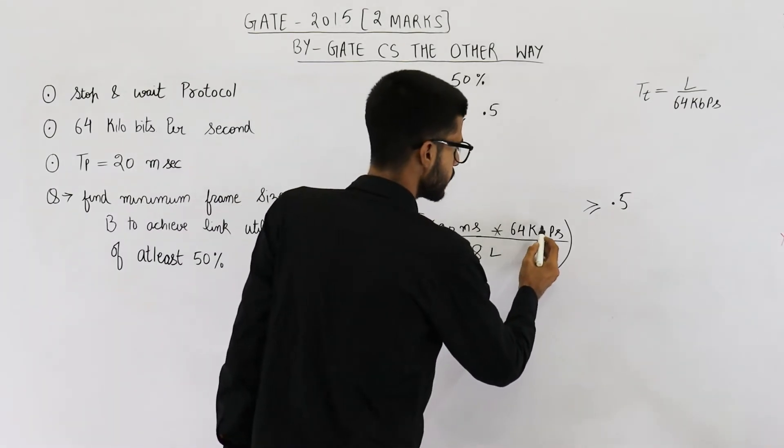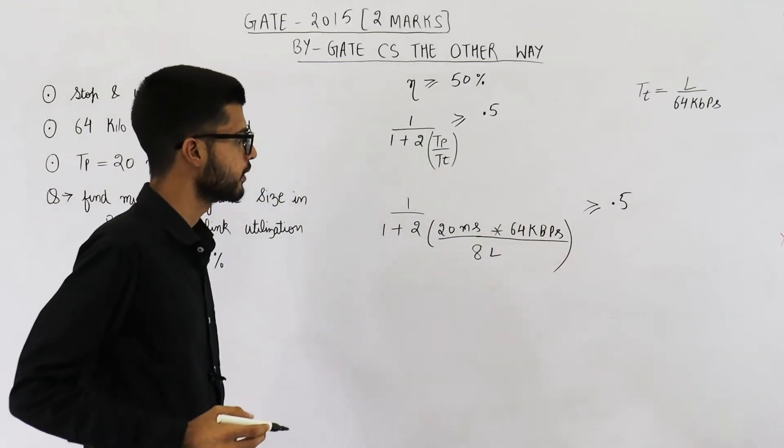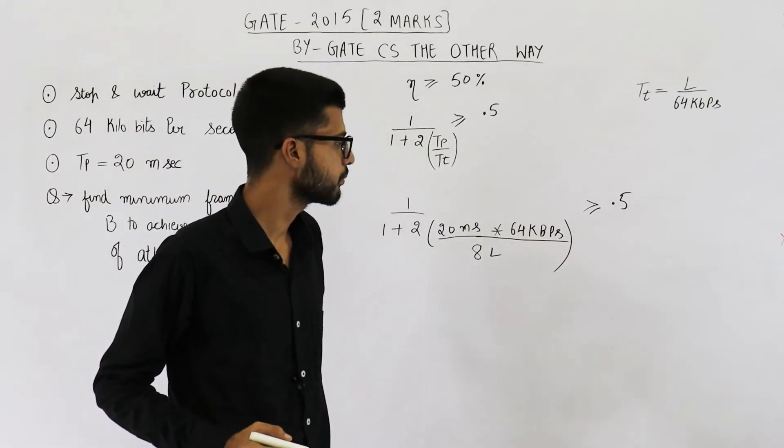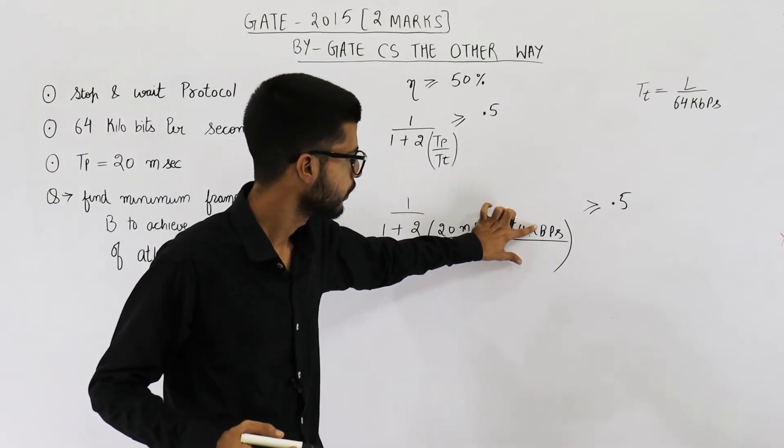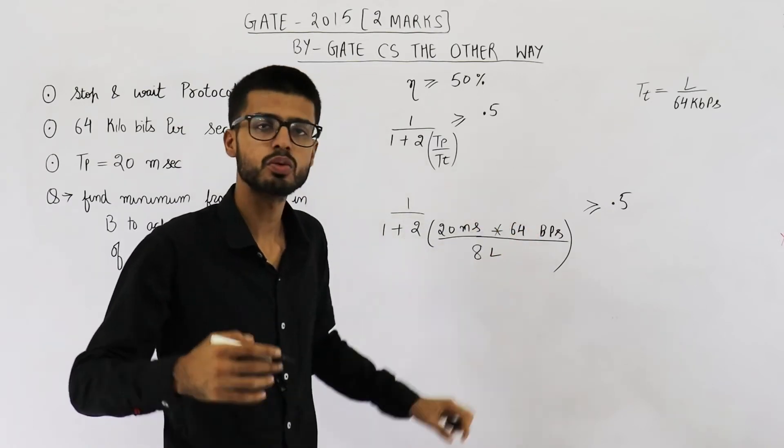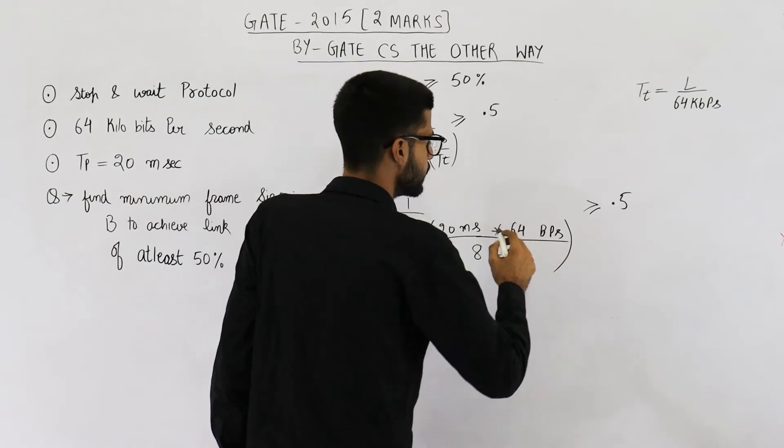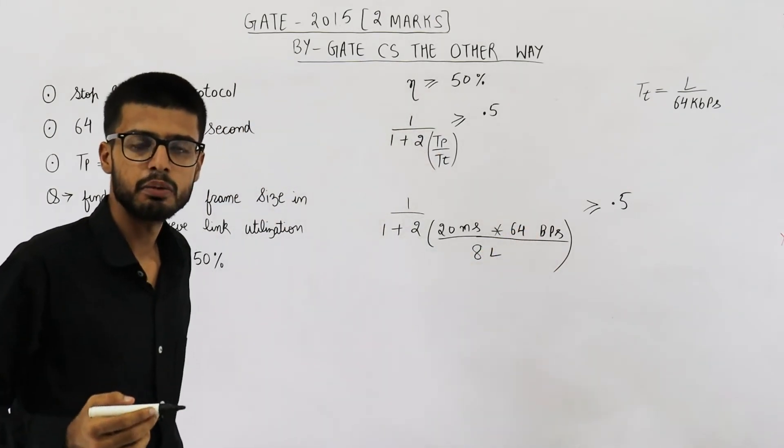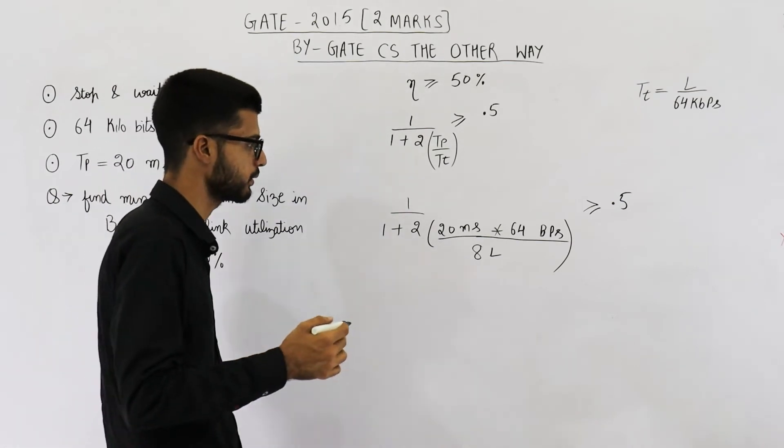So this will become k bytes per second. Now value of k will be 10 raised to the power 3. Just substitute it. Whenever its bandwidth value of k has to be 10 raised to the power something. And whenever its data or amount of memory the value of k will be 2 raised to the power something. 2 raised to the power 10 to be exact.